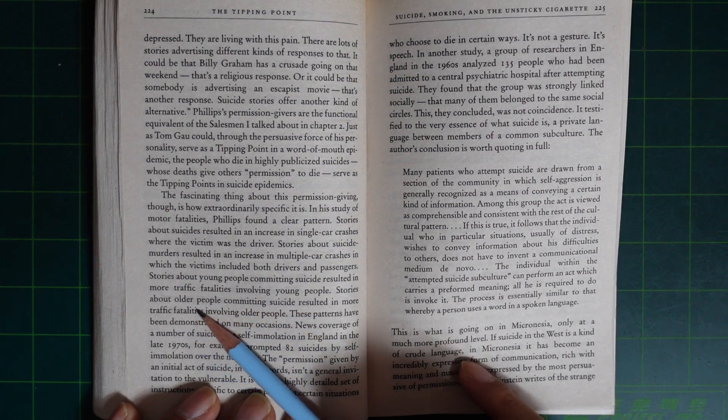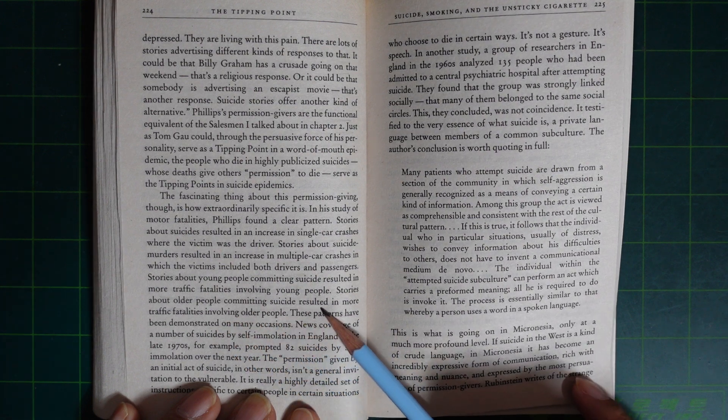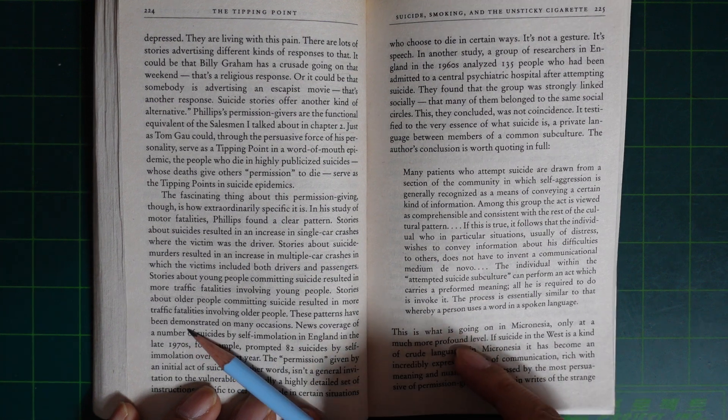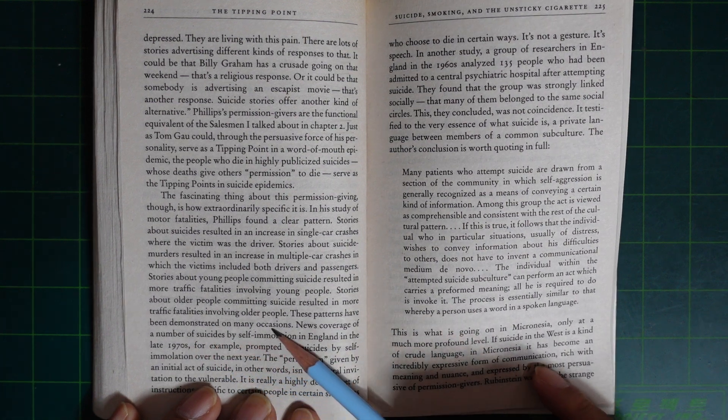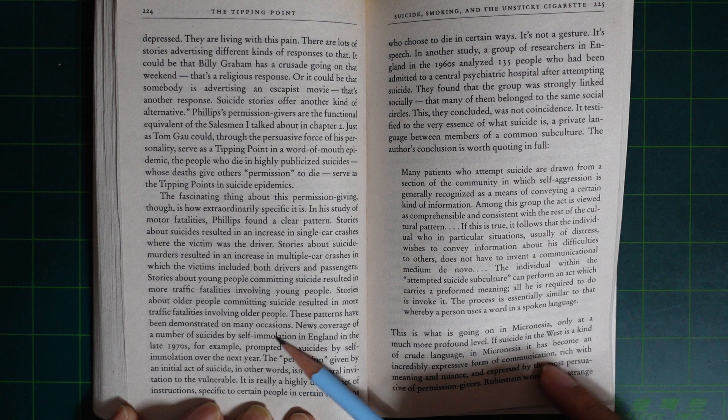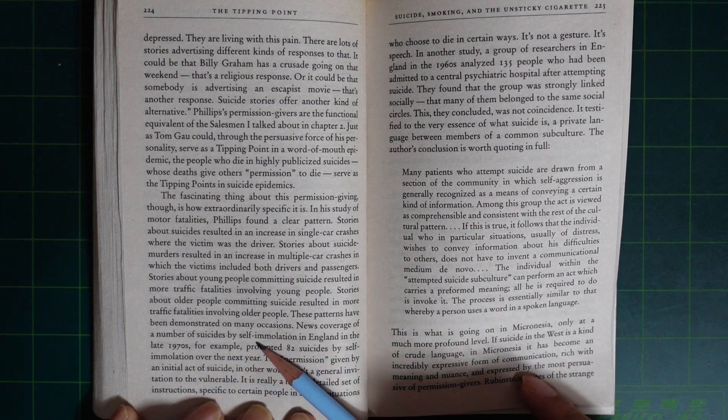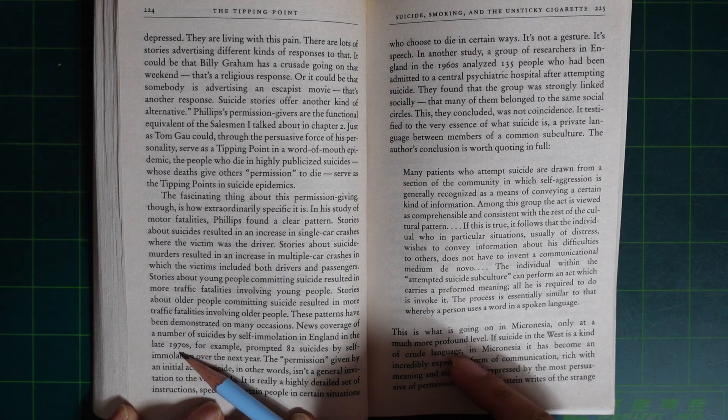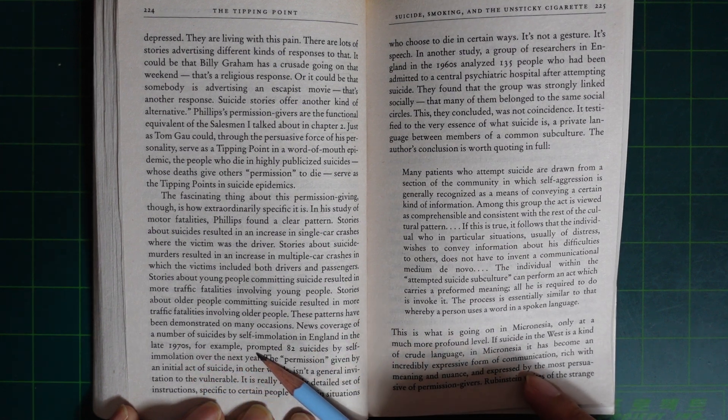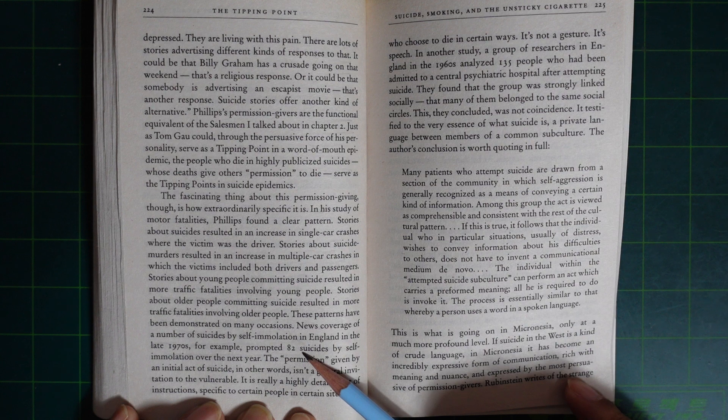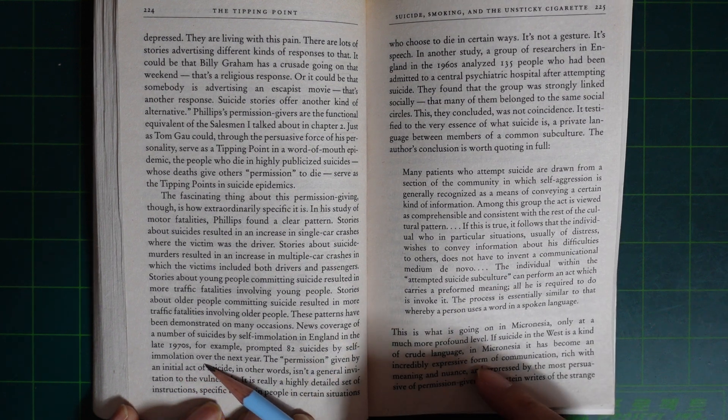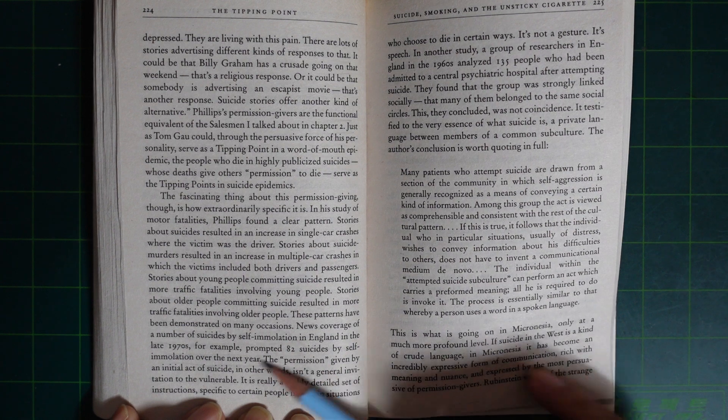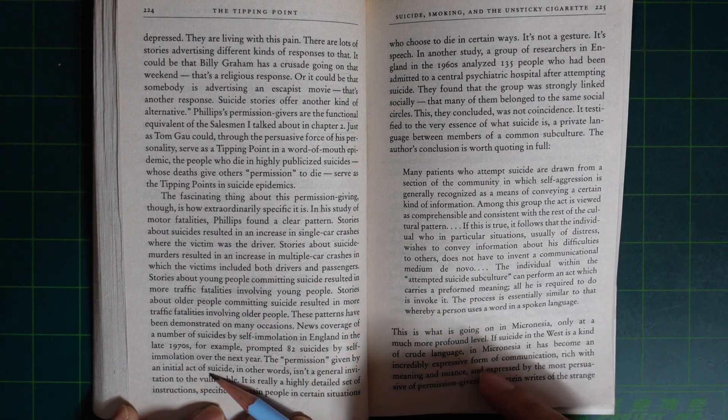Stories about young people committing suicide result in more traffic fatalities involving young people. Stories about older people committing suicide result in more traffic fatalities involving older people. These patterns have been demonstrated on many occasions. News coverage of a number of suicides by self-immolation in England in the late 1970s, for example, prompted 82 suicides by self-immolation over the next year.